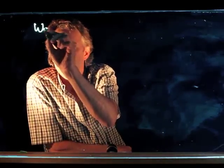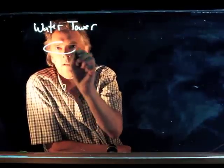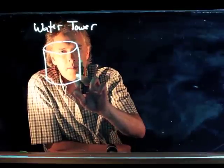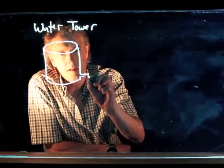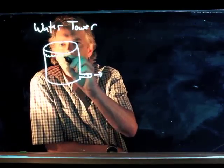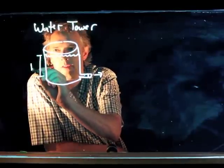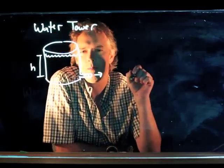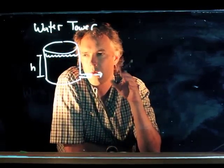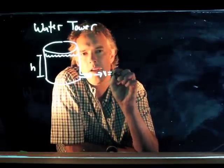Here's our water tower, open to the atmosphere on top, and then coming out the bottom is a spigot that shoots water out. Here's our water in the tower. Pretend that this height h is the level of the water above the level of the spigot. We can use Bernoulli's equation to analyze how fast that water is coming out.